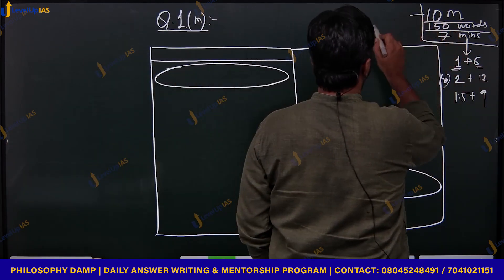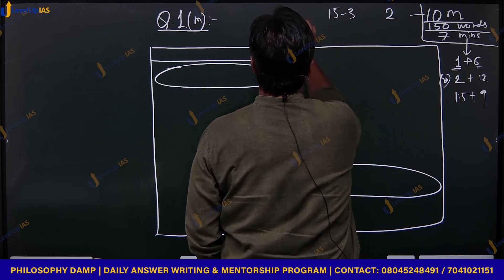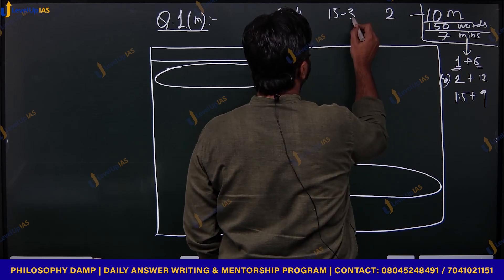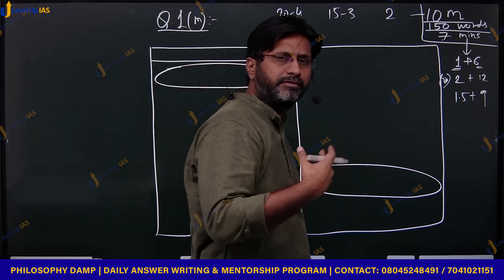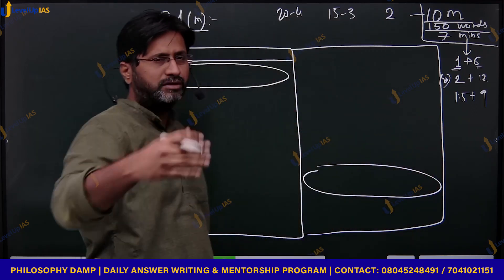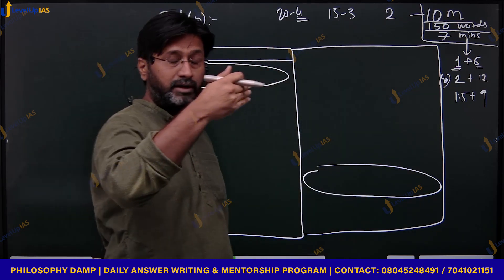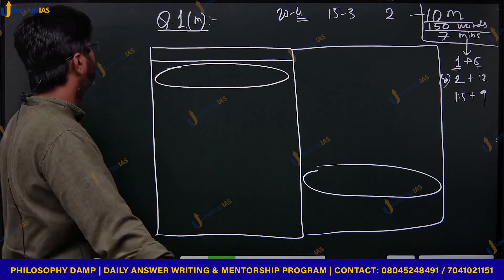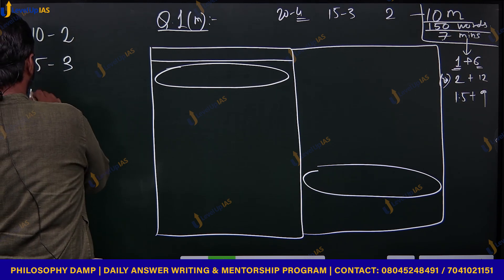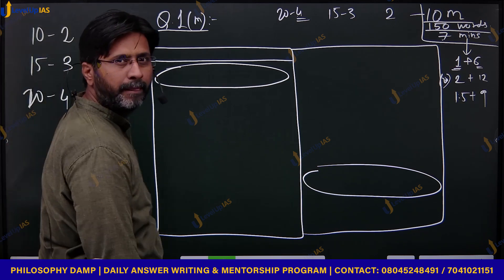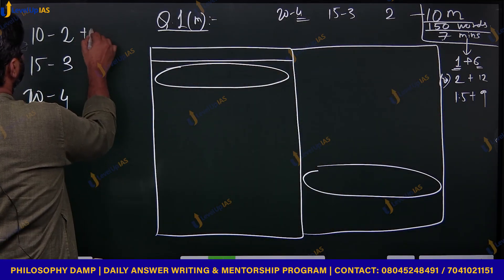For 10 marks, cover two subheadings; for 15 marks, three subheadings; for 20 marks, four subheadings - though sometimes three is fine if you can't come up with four. On average: 10 marks means two subheadings, 15 marks means three subheadings, 20 marks means four subheadings. And in most cases, these subheadings are followed by a criticism section.